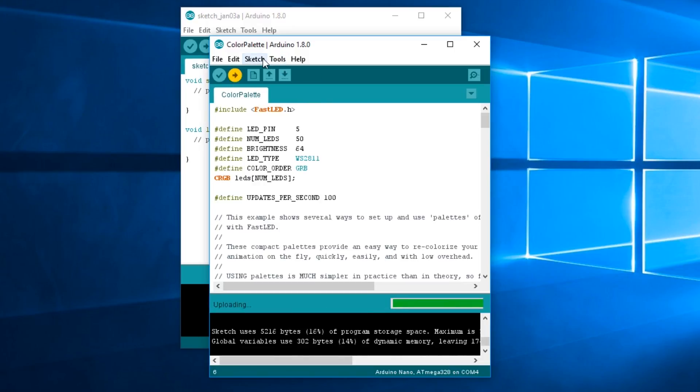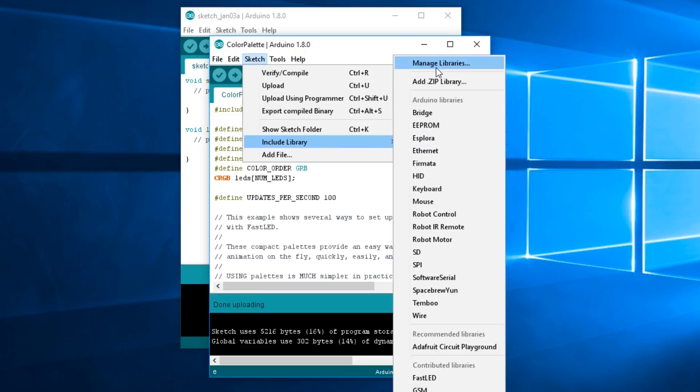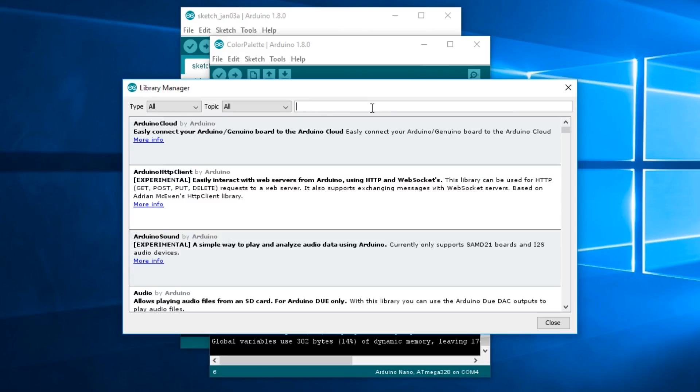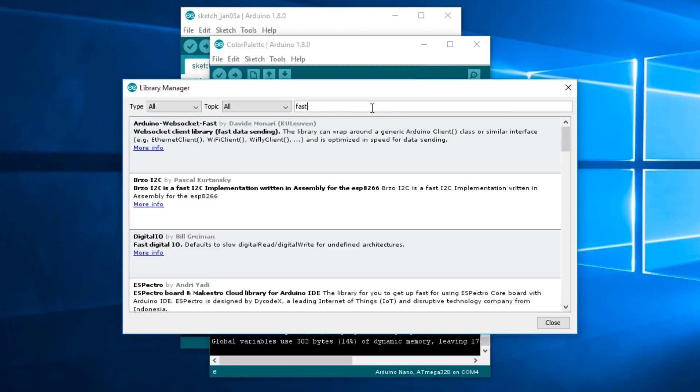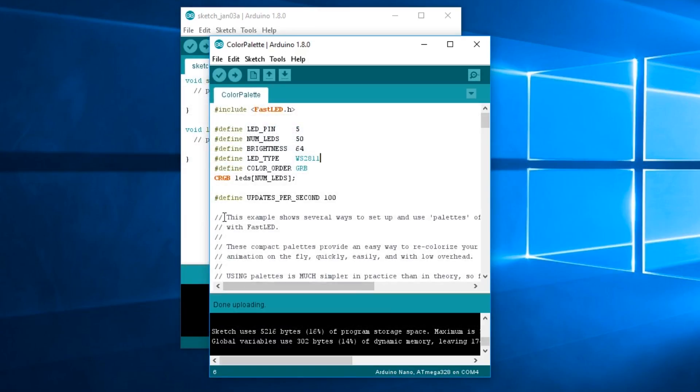And if you're wondering how you get that library, it's really simple. We go to sketch, include library, manage libraries, look up fast LED. You'll click on that. There'll be a little install button over here. So that's how you can get to that.